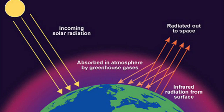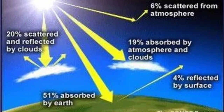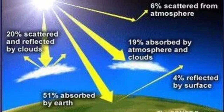If we consider the solar radiation received at the top of the atmosphere as 100 units, while passing through the atmosphere, some amount of the energy of the insolation is reflected, scattered, or absorbed by the atmosphere. So only the remaining part of the insolation reaches the Earth's surface and heats it. The insolation mainly heats the Earth's surface, as the atmosphere is more or less transparent to the incoming solar radiation.